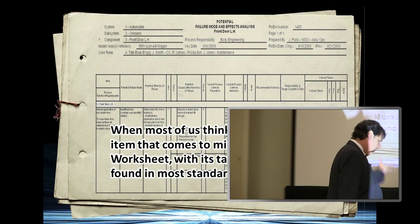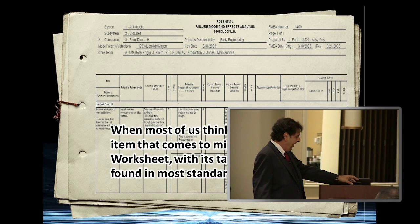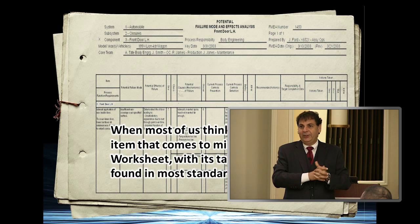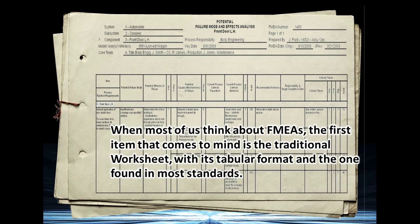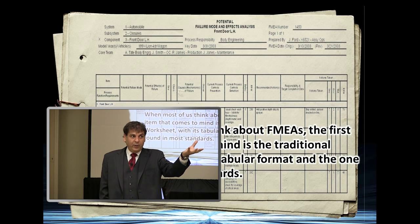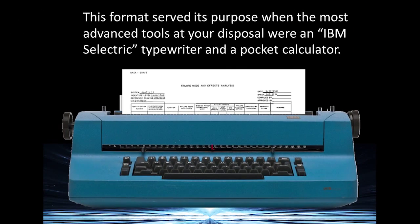Even though we may have perfected the activities, sometimes we get stuck thinking about certain things in a certain way. Let me pick one activity — the FMEA. Everybody in every room I sit in has done at least an FMEA if they call themselves a reliability engineer. If I go back to 1949, the first standard was put together — what was the best way to capture information at that time? On a printed piece of paper. How else did you share information in the 50s and 70s? Through documents. Now fast forward to 2013 — the best way to share information is digitally. This format served us very well when the most advanced tool at our disposal was an IBM typewriter.